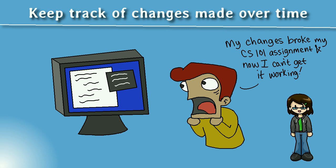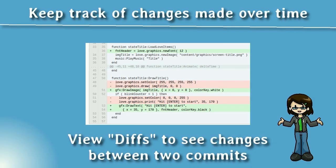Have you ever worked on a project and made a big change that broke everything? Maybe you didn't have any backups and weren't sure what exactly you did to break it. If you were using source control, you would be able to see the changes in your source files over time and who made the changes. You can view this or pull down the old version of your files anytime.